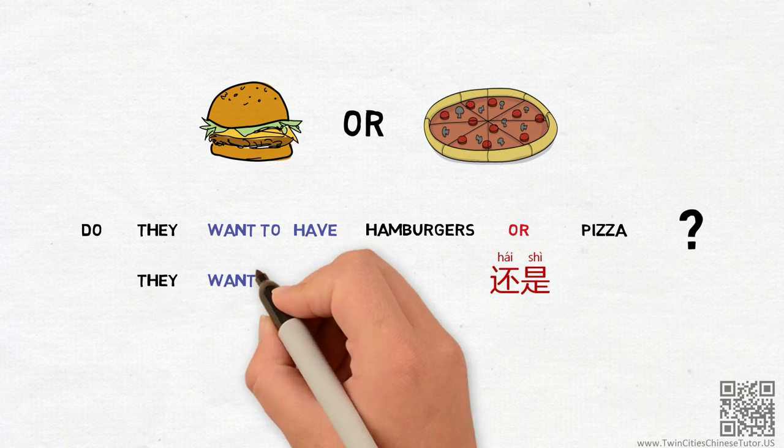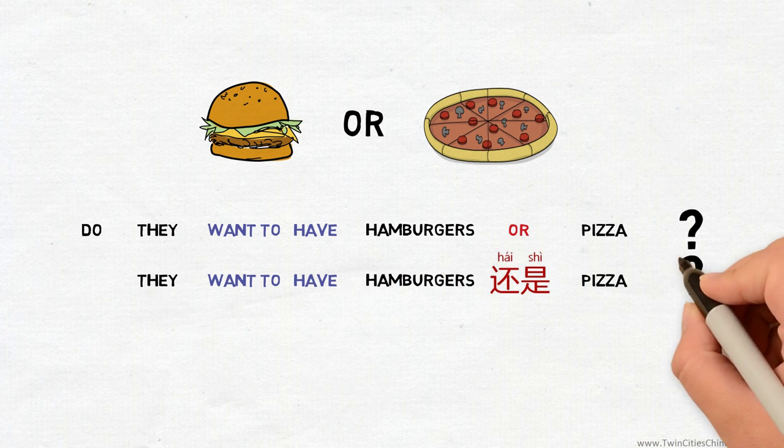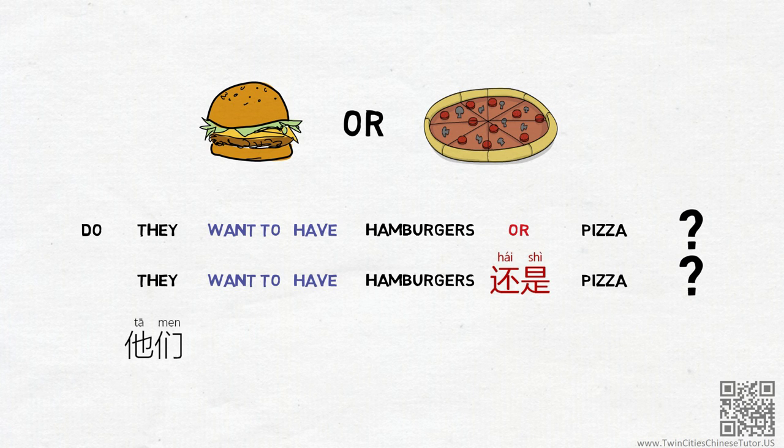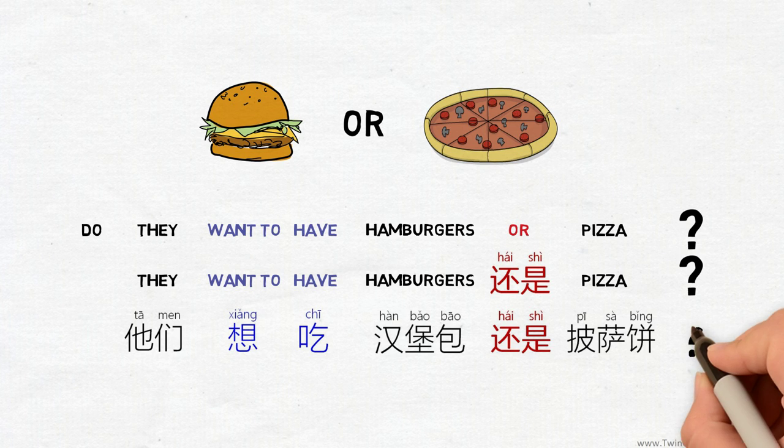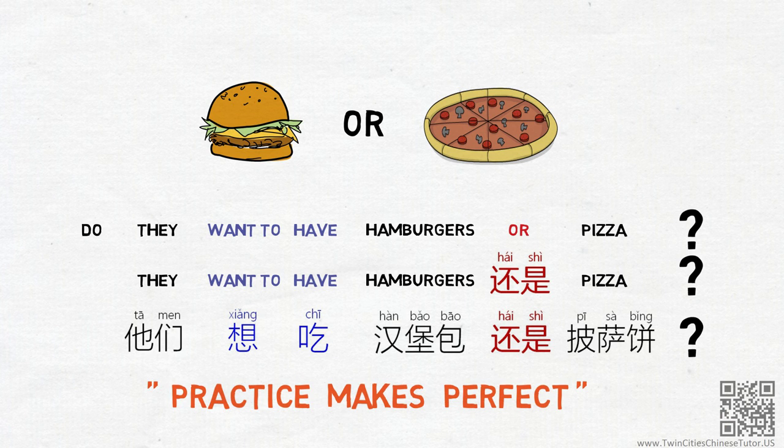And in Chinese, 他们想吃汉堡包还是披萨饼? This word order is a little awkward for English speakers. Because in Chinese, questions and statements are put together in the same structure as explained in other videos. But I assure you that with practice, you'll get comfortable over time.